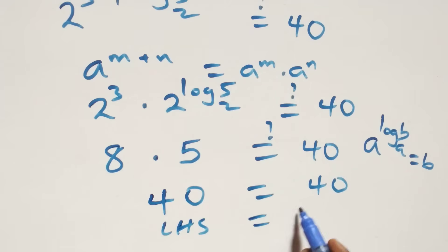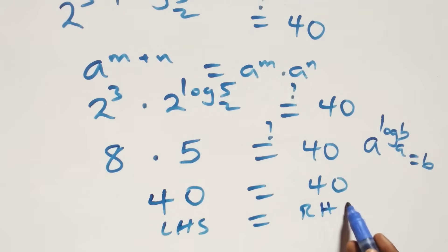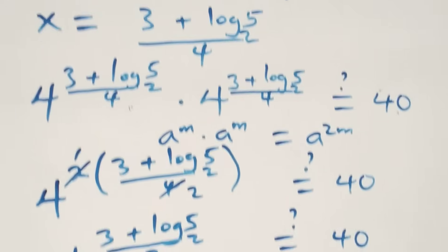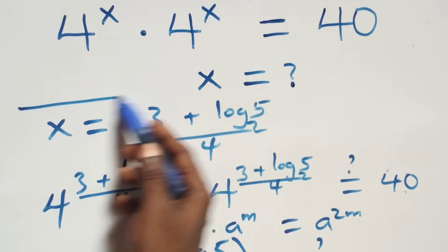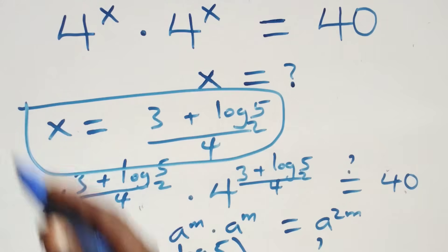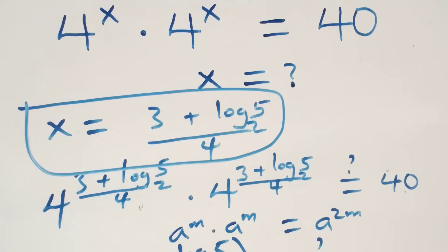Left-hand side equals right-hand side, and therefore we conclude that x equals to 3 plus log 5 base 2 all over 4 satisfies this given problem. Thank you for watching — don't forget the steps, subscribe for more videos, turn the notification bell on, share this video, give me the thumbs up. See you in the next class!